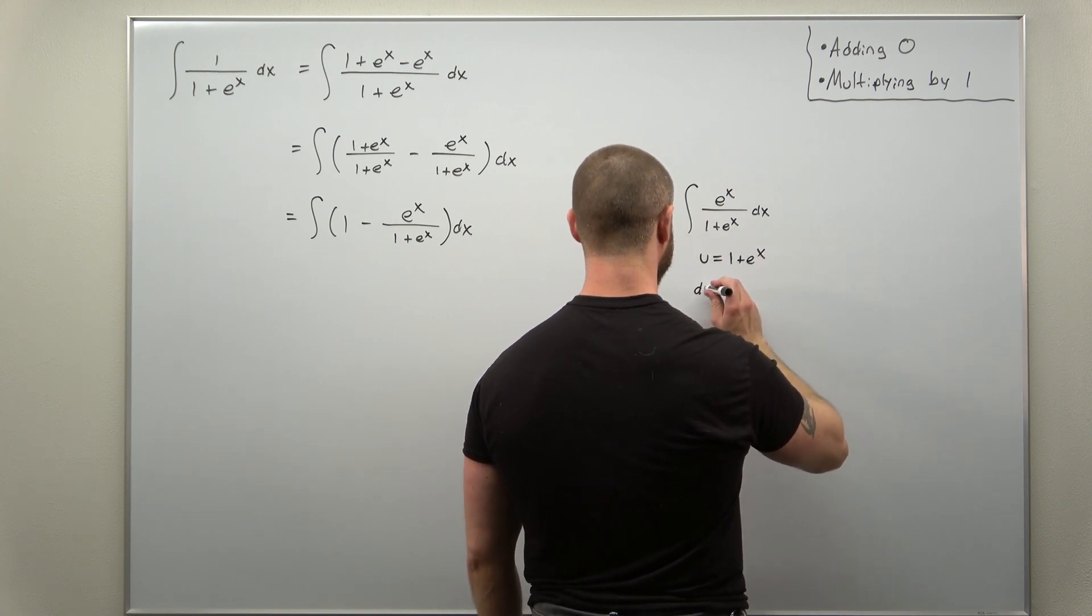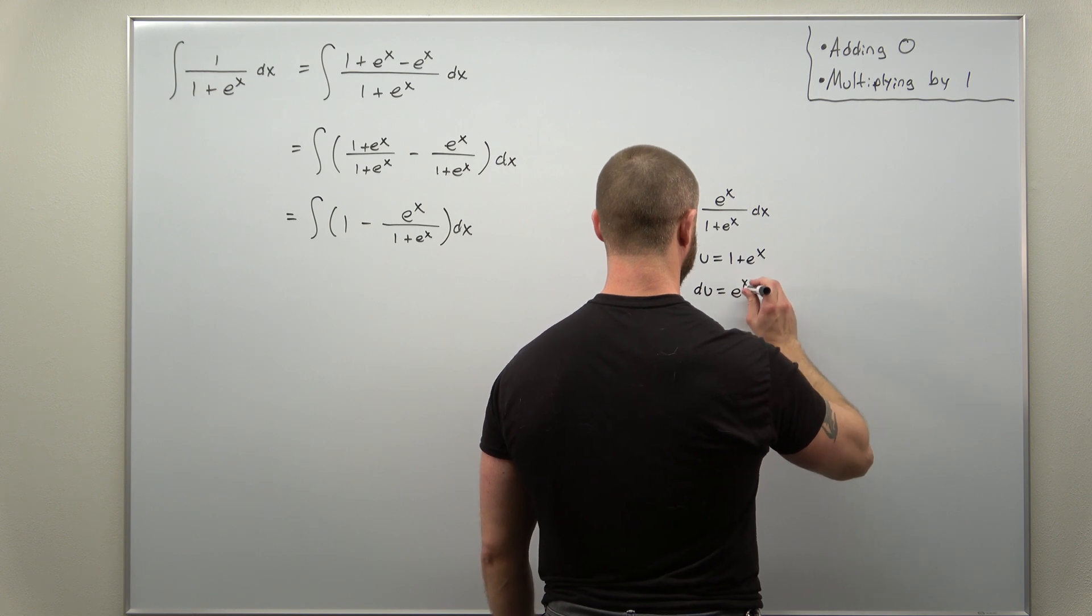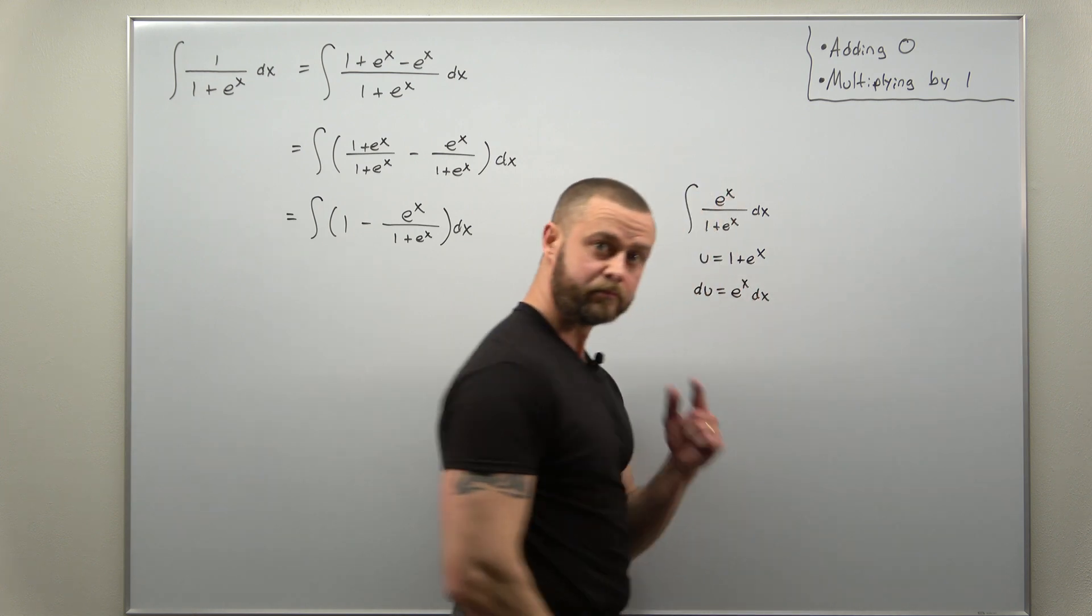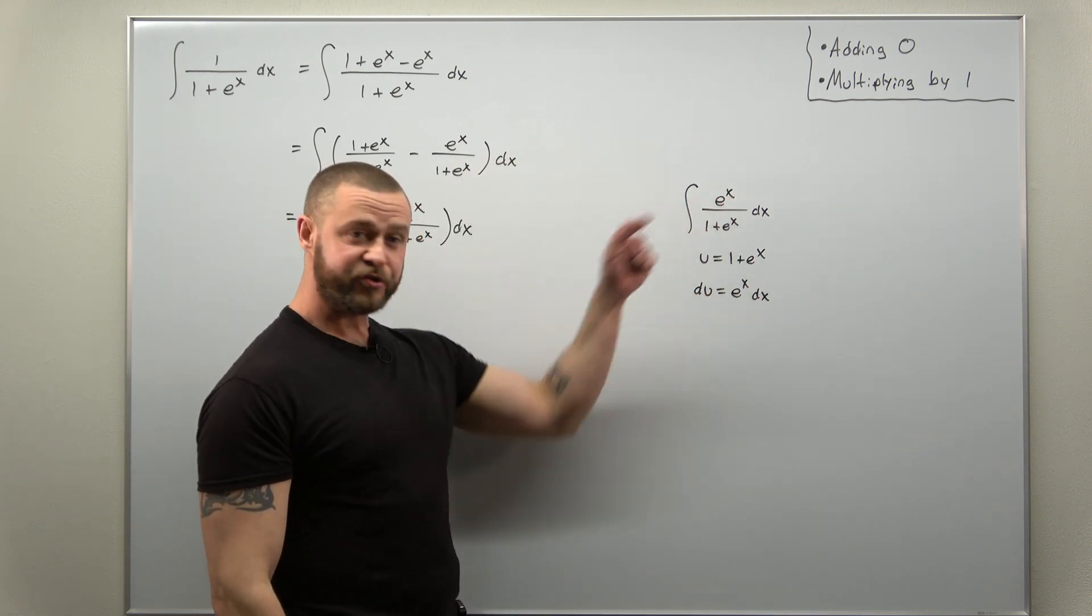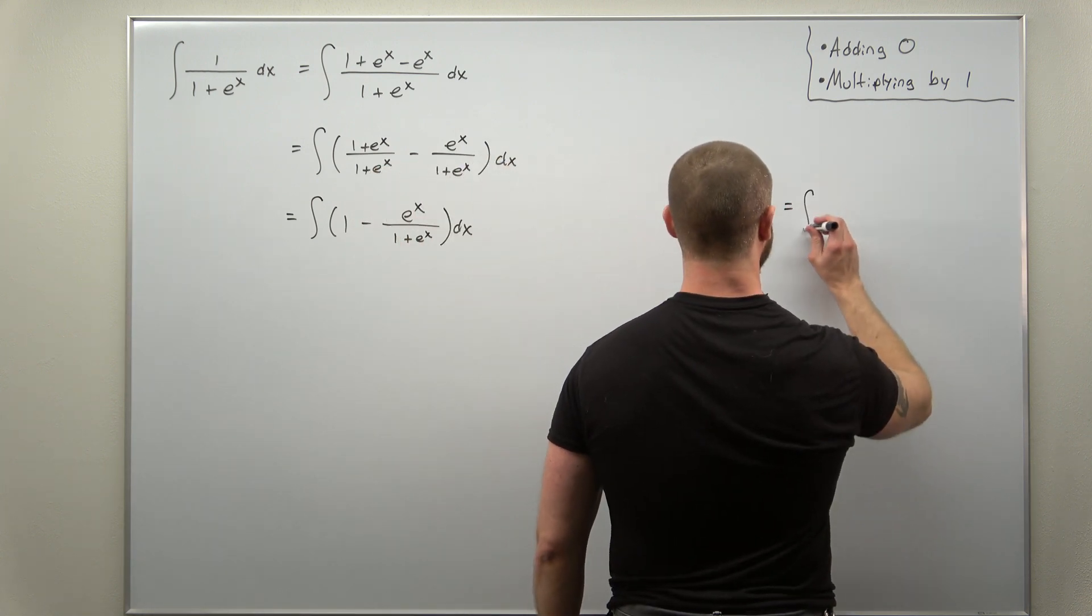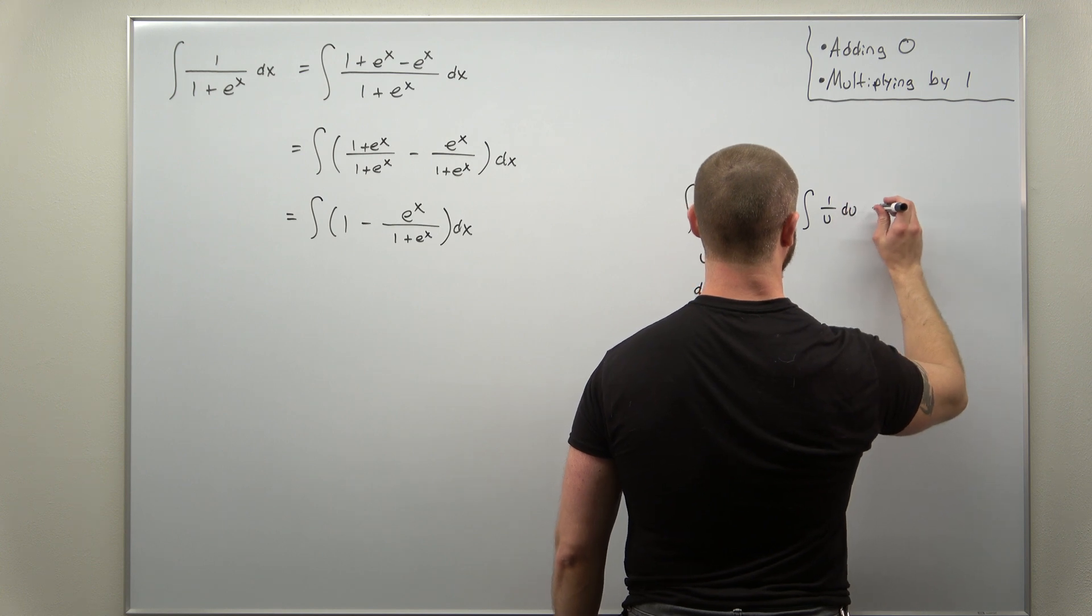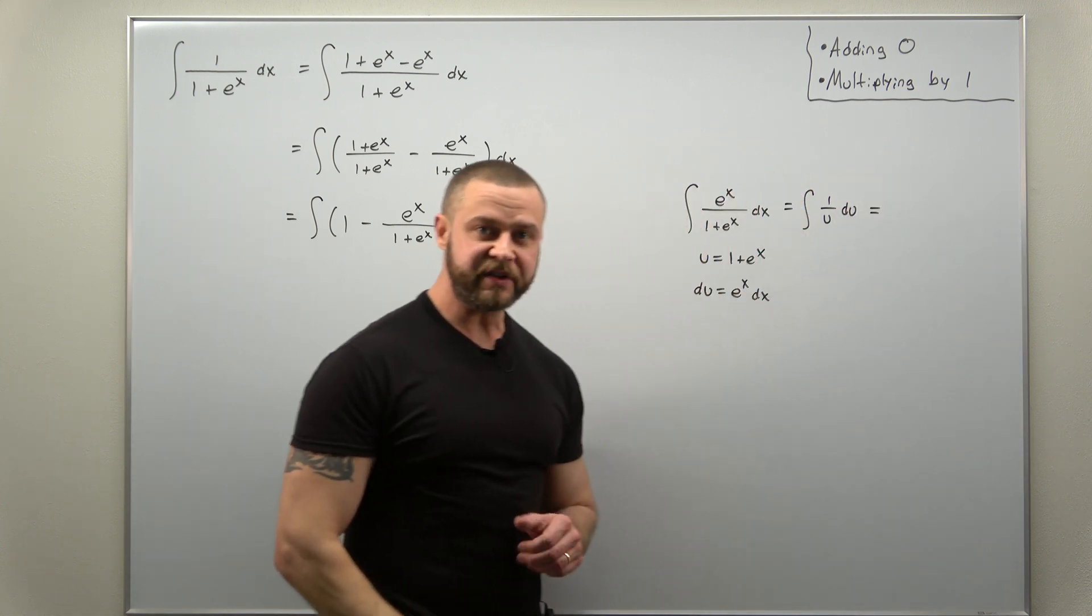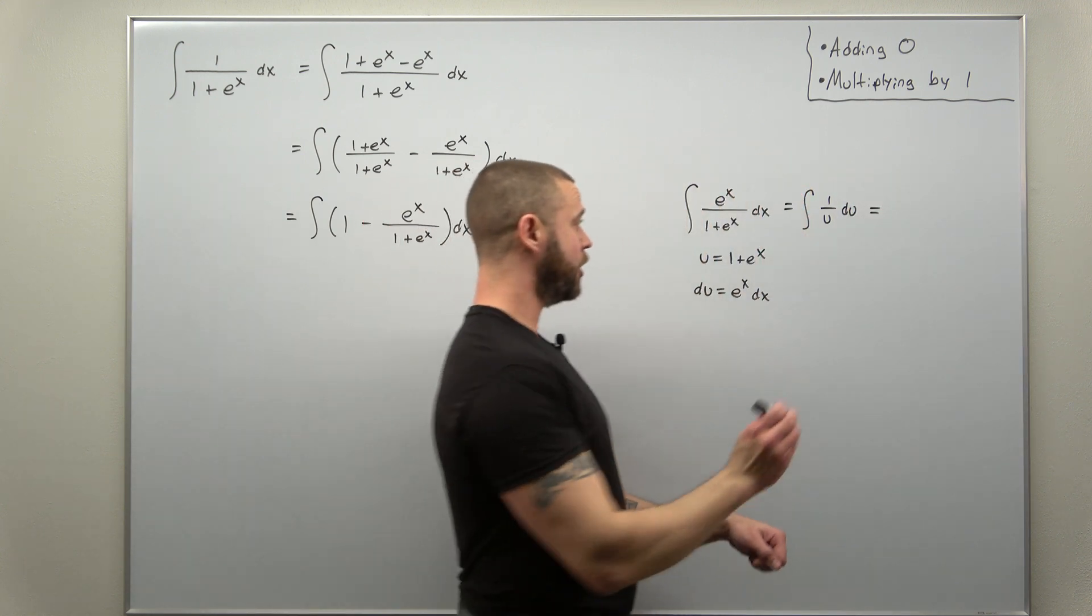In fact, you're probably already done. If not, make sure you rewrite that correctly in terms of u. This will convert to 1 over u du. And very easy to find that antiderivative: natural log of u.